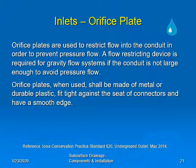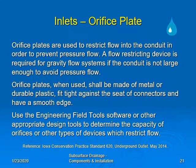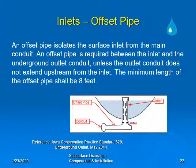Use the engineering field tool software or other appropriate design tools to determine the capacity of orifices or other types of devices which restrict flow. An offset pipe isolates the surface inlet from the main conduit. An offset pipe is required between the inlet and the underground outlet conduit unless the outlet conduit does not extend upstream from the inlet. The minimum length of the offset pipe shall be 8 feet. By offsetting the inlet from the conduit, the risk of damage to the conduit is lessened. The offset pipe could also be used to limit flow to the conduit, thus avoiding use of an orifice plate. The engineering field tool software can incorporate this into the design.